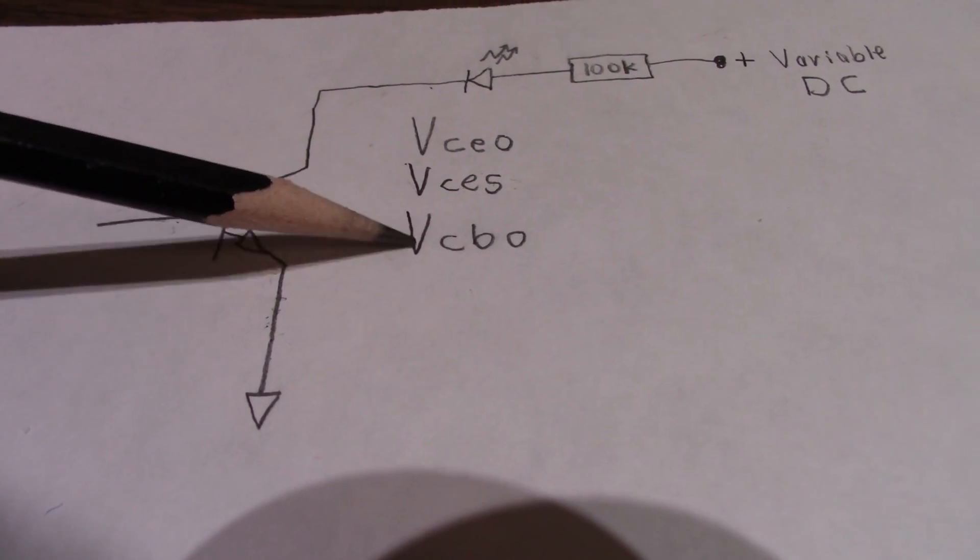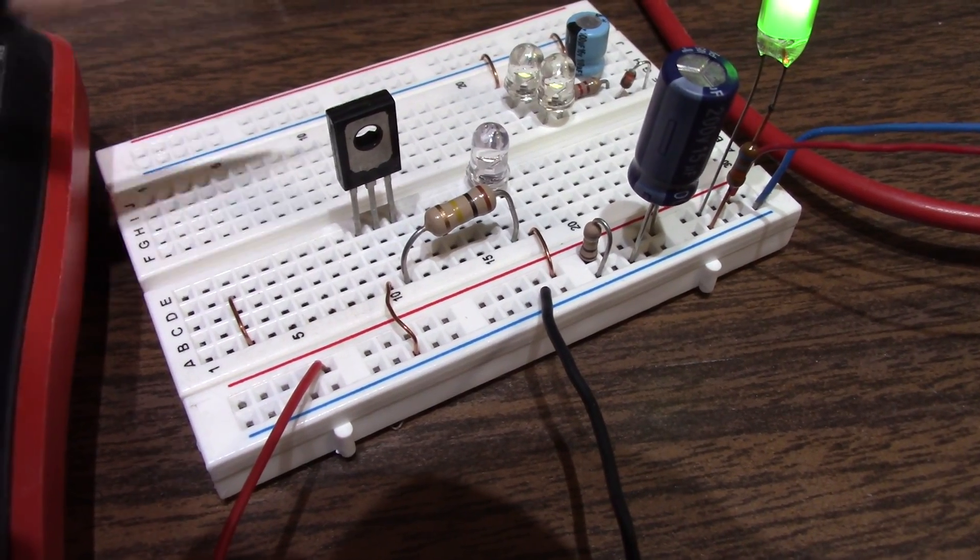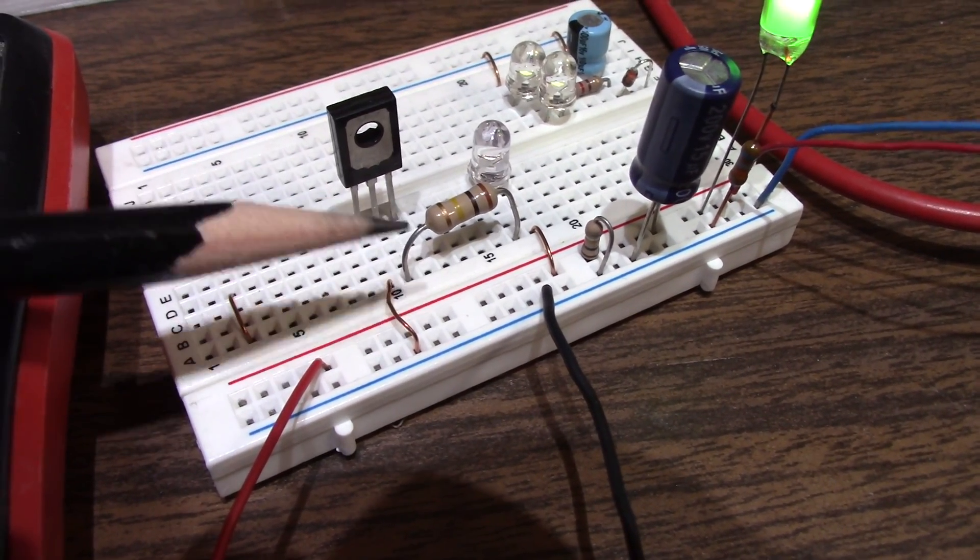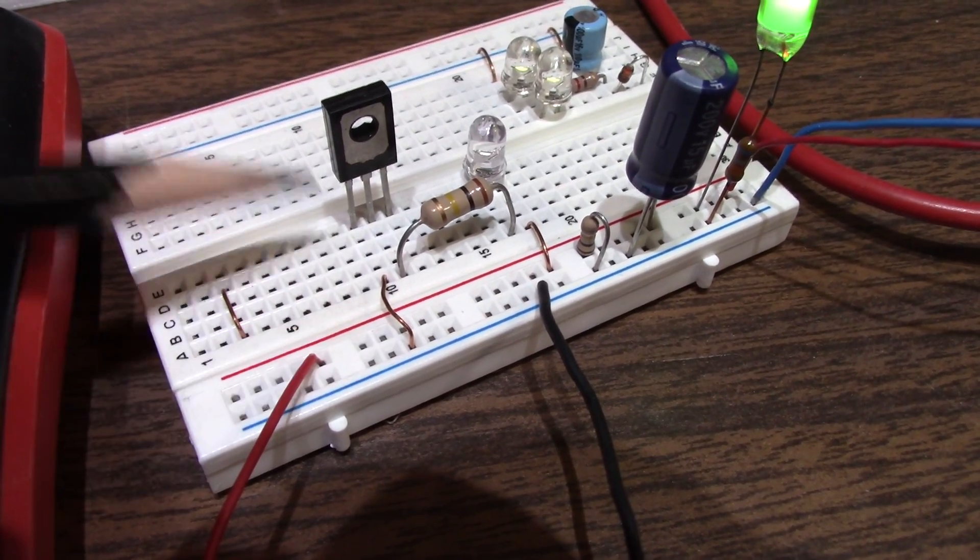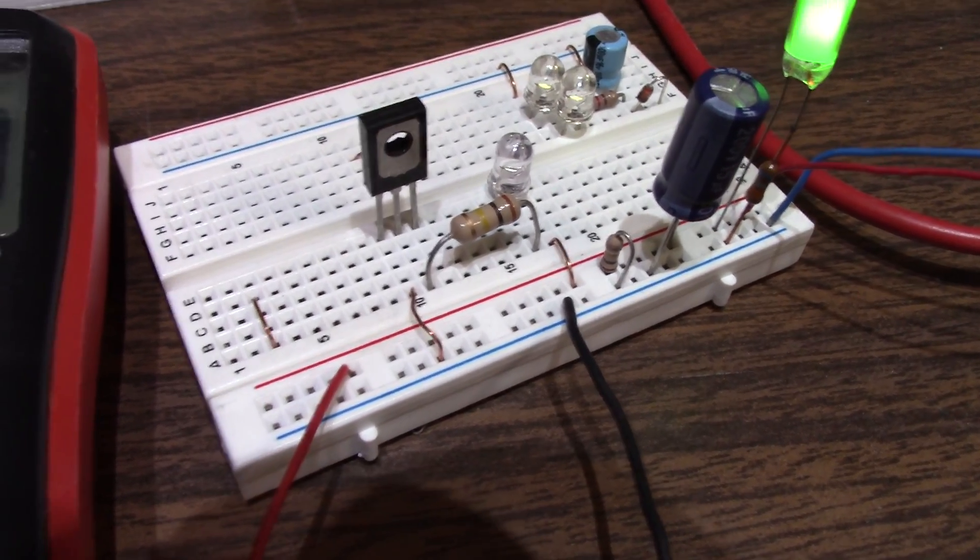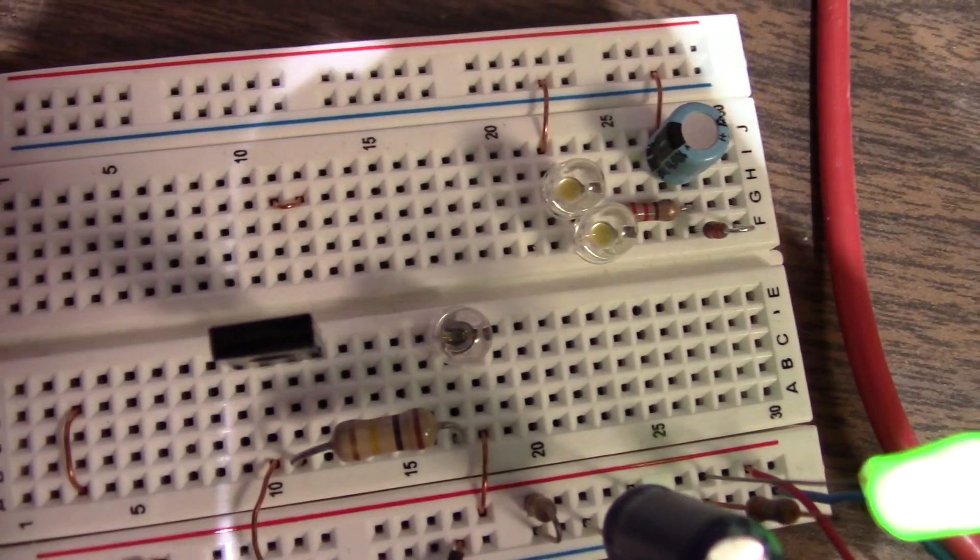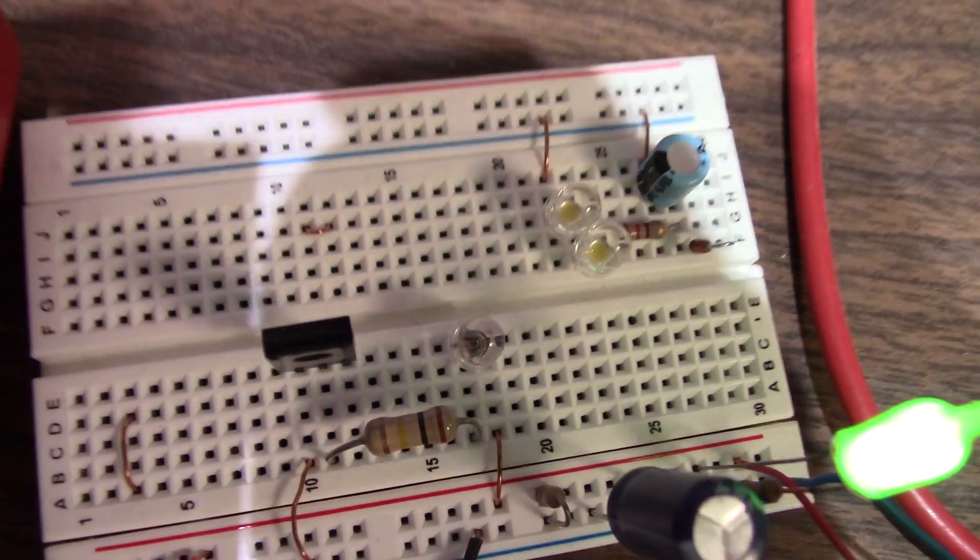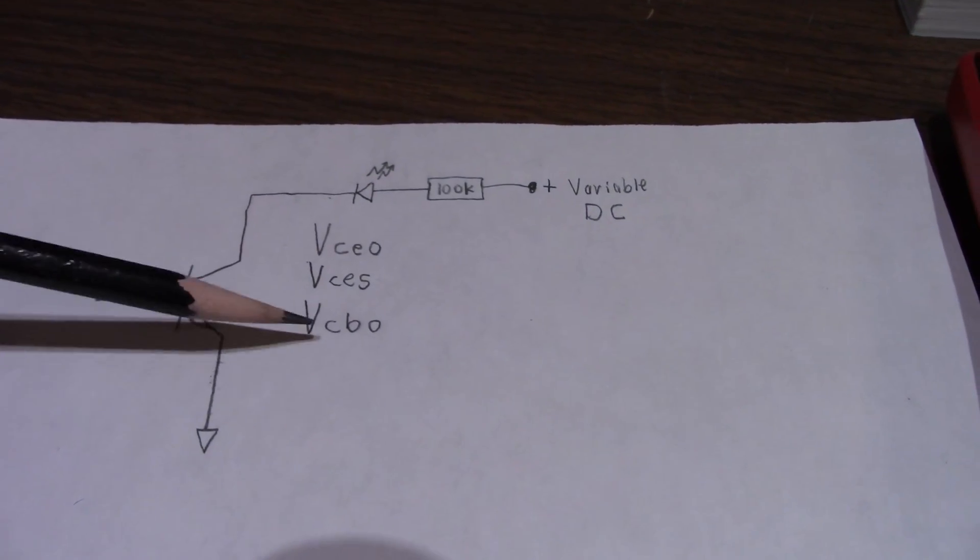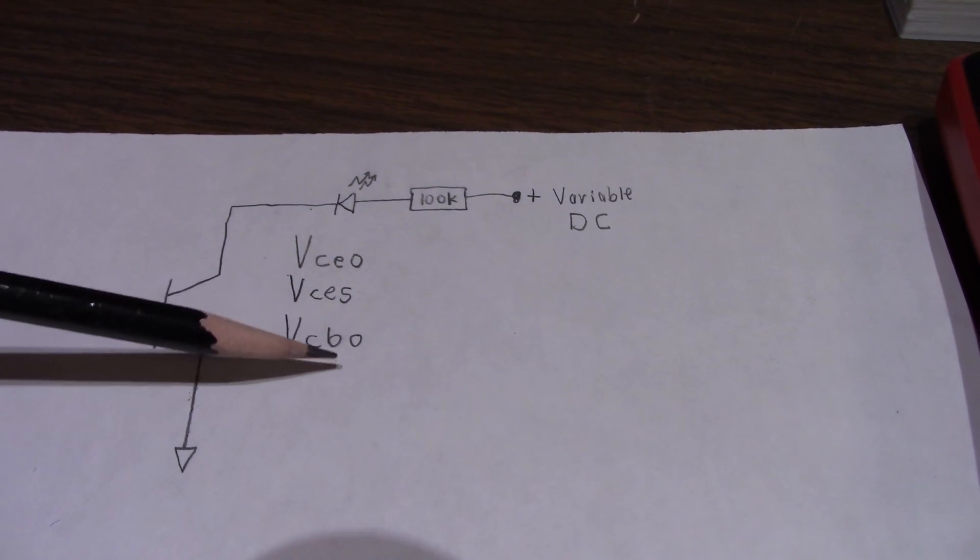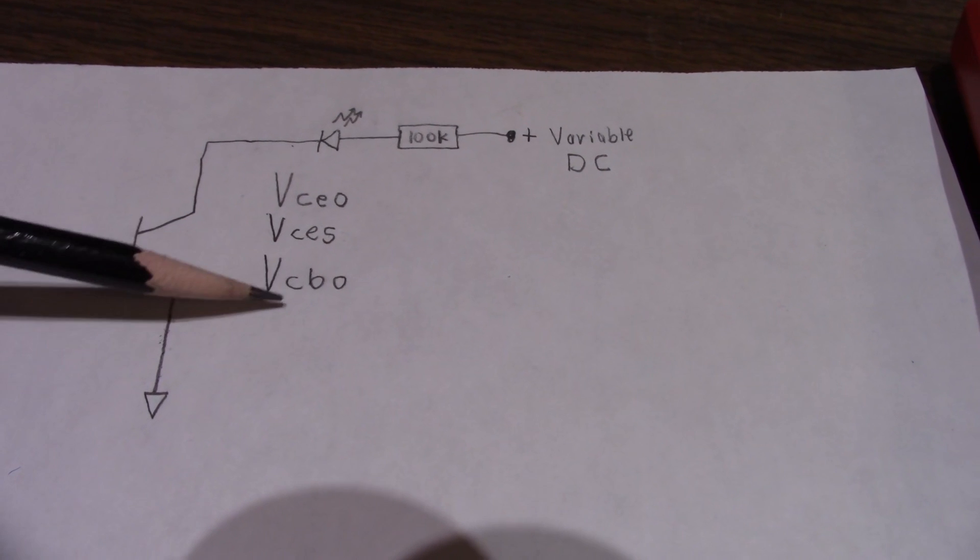Okay, next is the voltage collector to base with the emitter open. So, I rearranged the circuit here. So, I'm putting the voltage on the collector and coming out of the base. The emitter is open in this condition. And it's already at maximum voltage and nothing. So, VCBO will be higher. I know some datasheets have that voltage the same, but normally the transistor will have a higher VCBO voltage.